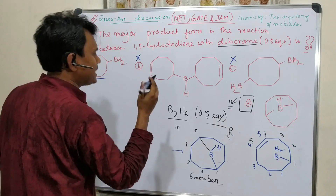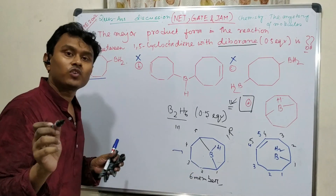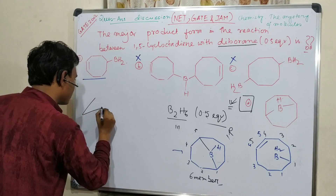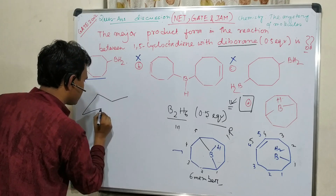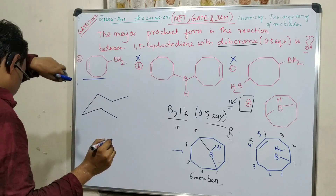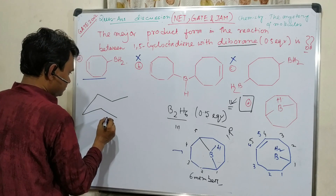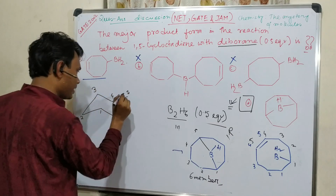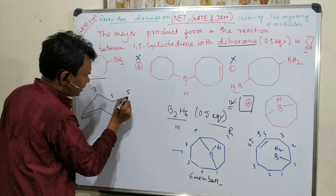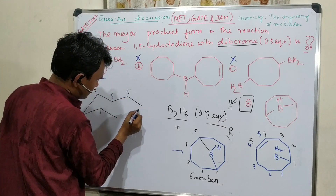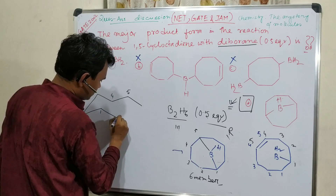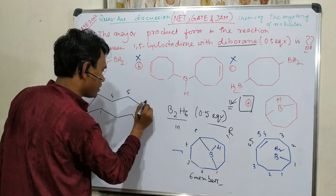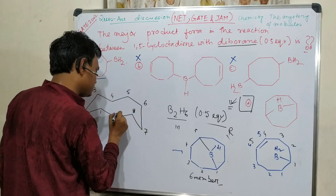Let me give another explanation for why the 6-membered ring is preferred over the 5-membered ring. Let's draw the cyclooctadiene ring and number it: 1, 2, 3, 4, 5, then 6, 7, 8, 9. So the question is: why does the 9-membered bridged product form instead of the 6-membered one?